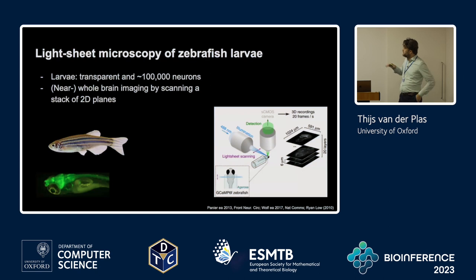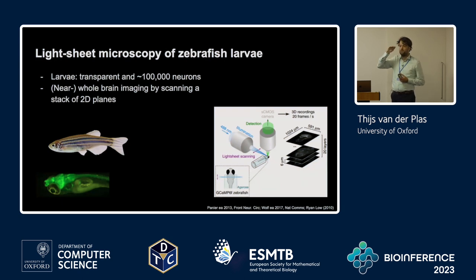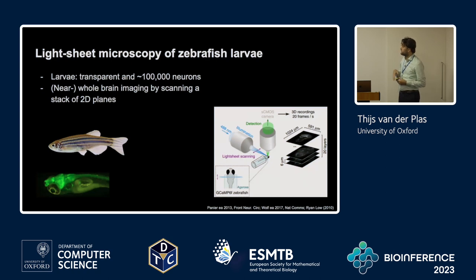The way to do this is with a setup called light sheet microscopy, where we use a laser to illuminate a 2D plane of light through the zebrafish brain which we can then image. We vertically move this 2D plane very rapidly, so we effectively get a stack of 2D planes which together makes up a volume. We can record these volumes of neural activity at single cell resolution at about 3 to 4 Hz typically.